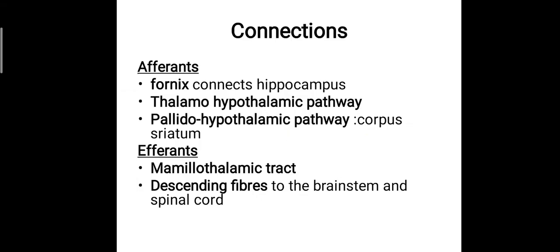Regarding the connections of the hypothalamus: the afferents — impulses coming into the hypothalamus — include the fornix connecting it to the hippocampus, the thalamohypothalamic pathway connecting the thalamus and hypothalamus, and the pallidohypothalamic pathway connecting with the corpus striatum. The efferents include the mammothalamic tract and descending fibers to the brainstem and spinal cord.